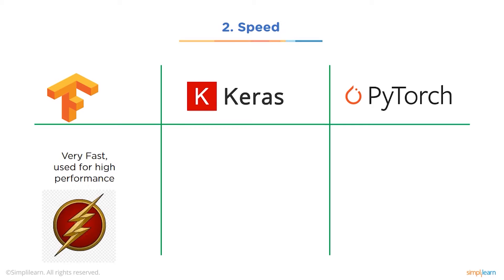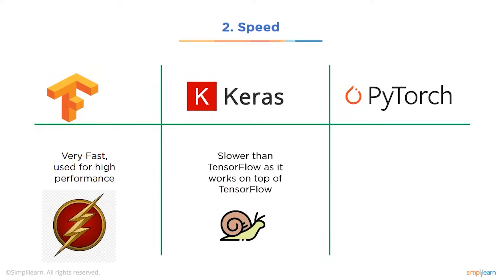The next criterion is speed. TensorFlow is very fast and used for high performance. Keras is slower because it works on top of TensorFlow — it must wait for TensorFlow to finish before starting its own implementation. PyTorch works at roughly the same speed as TensorFlow since both are low-level APIs. In terms of computation speed, TensorFlow and PyTorch are nearly equal, but in development speed, Keras is faster due to its built-in functionalities that significantly reduce development time.